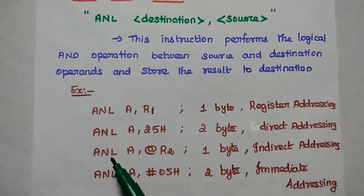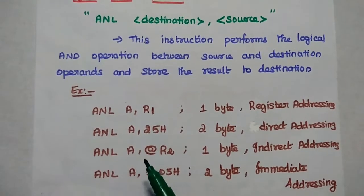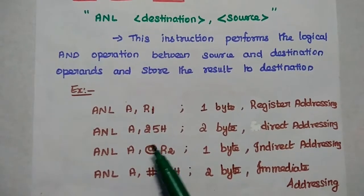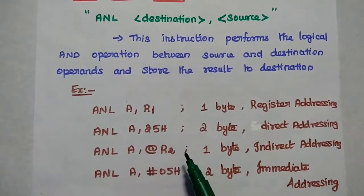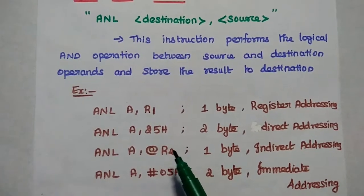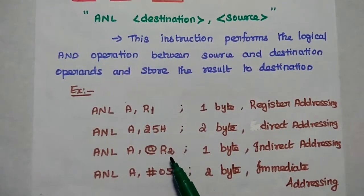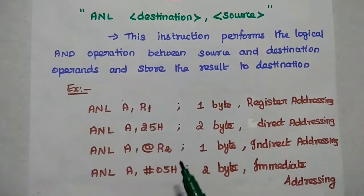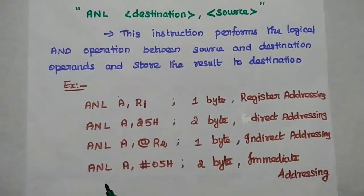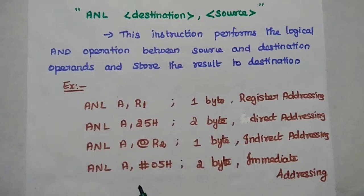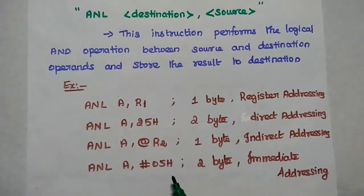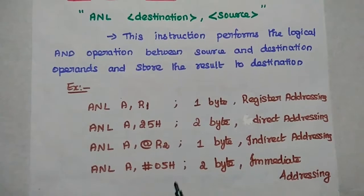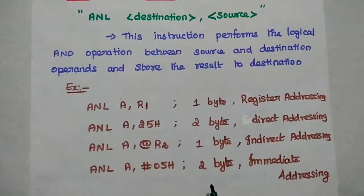The next example is ANL A, @R2. Here @ represents the indirect memory addressing mode, so the location is stored in register R2. The last example is ANL A, #05H, where the hash symbol represents immediate data.